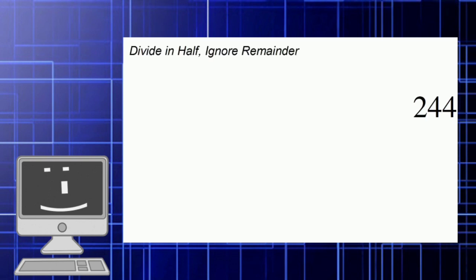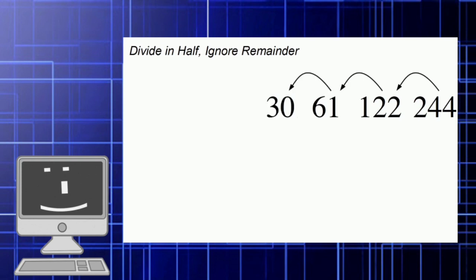244 divided by 2 is 122, and 122 divided by 2 is 61, and 61 divided by 2 is 30 remainder 1 — we ignore the remainder and just write the quotient and repeat the process. 30 divided by 2 is 15, and 15 divided by 2 is 7 remainder 1 — remove the remainder, and so on and so forth.